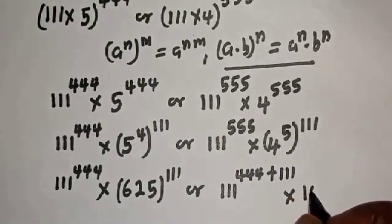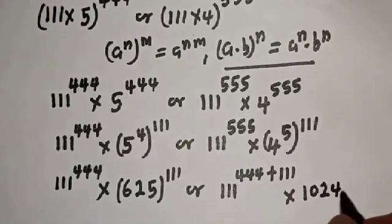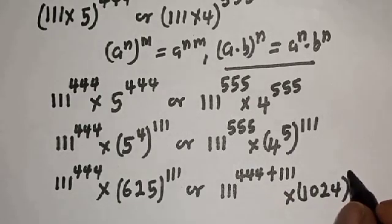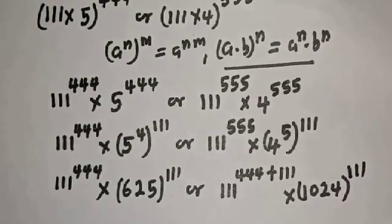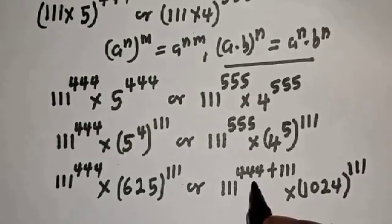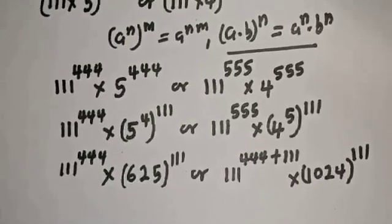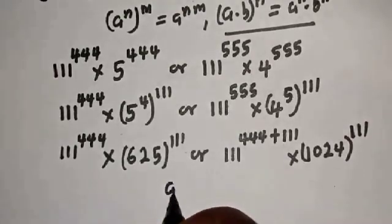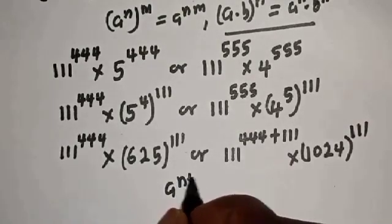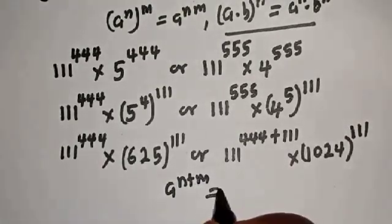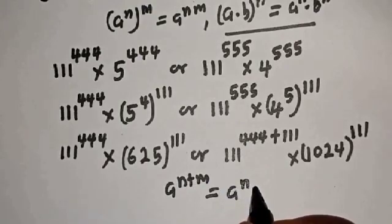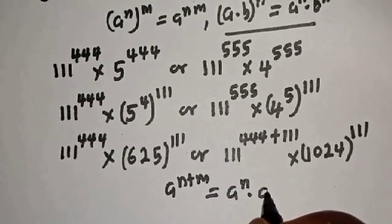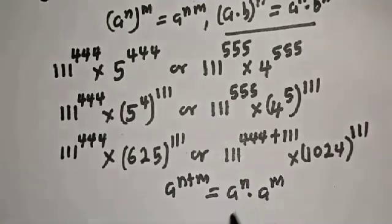Since 4 raised to power 5 equals 1024, we get 1024 raised to power 111. Also using the rule that a raised to power n+m equals a raised to power n, multiplied by a raised to power m, we can expand the 111 raised to power 444+111 term.